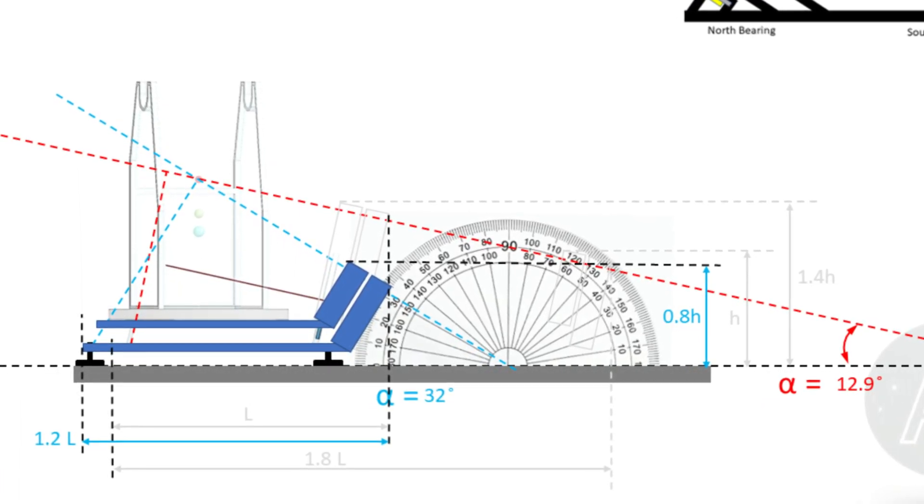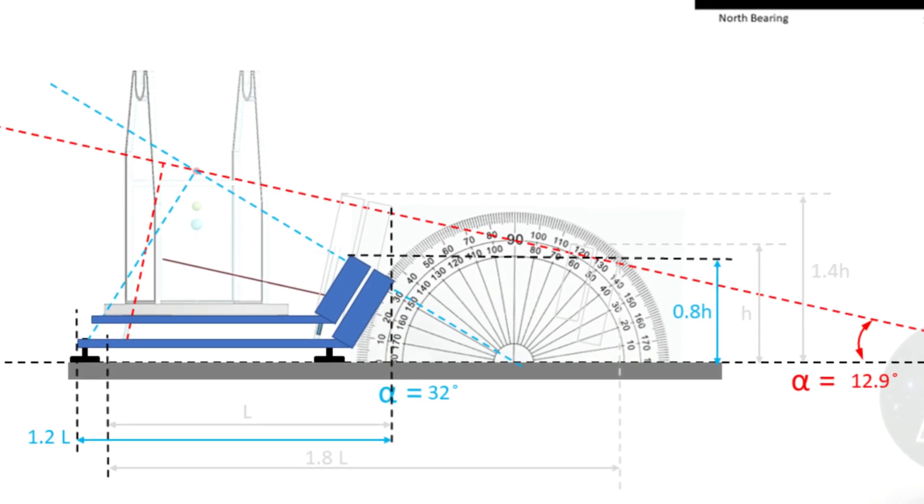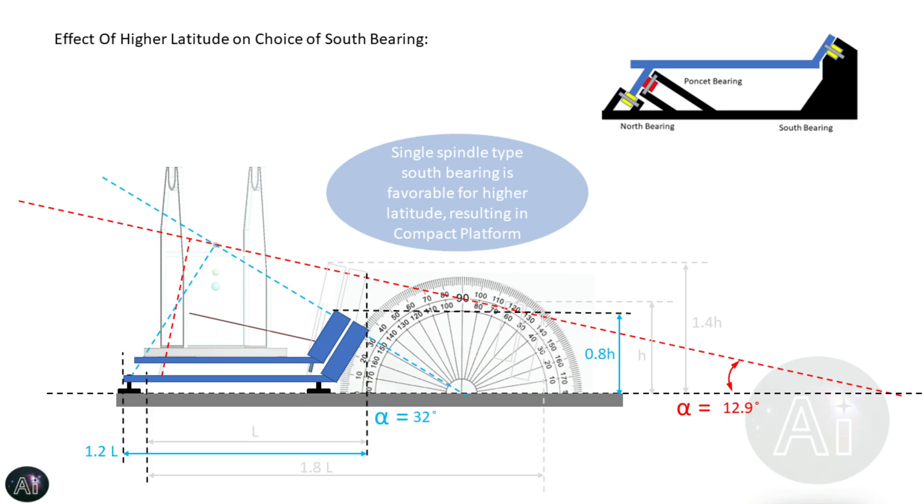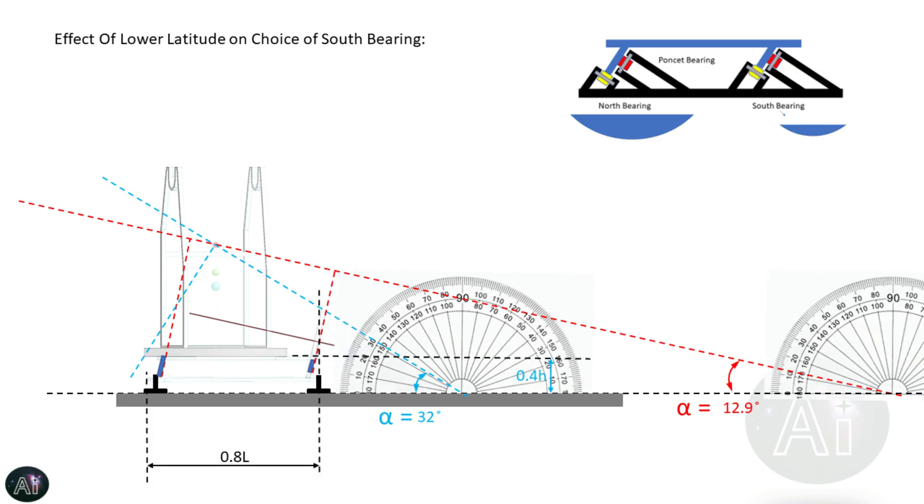For a spindle type of south bearing, which means that the single spindle type south bearing is very favorable for the higher northern latitude. Probably the more higher you go, 40 or 45 degrees, 60 degrees, the better it is. But it is definitely not recommended for lower latitudes.